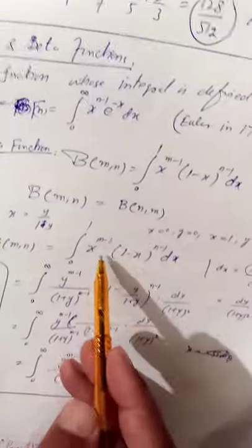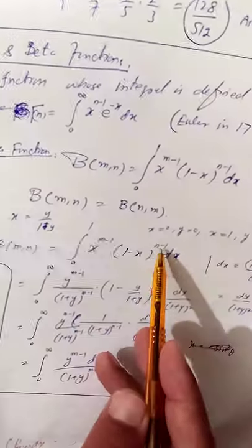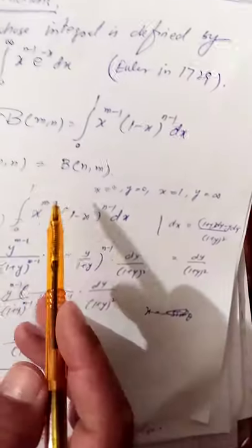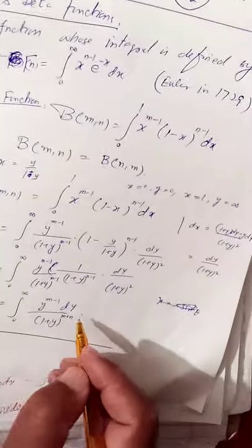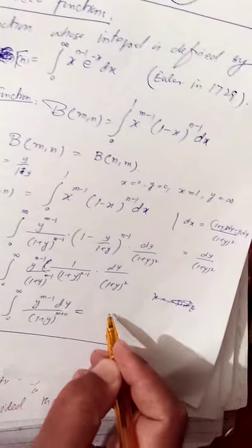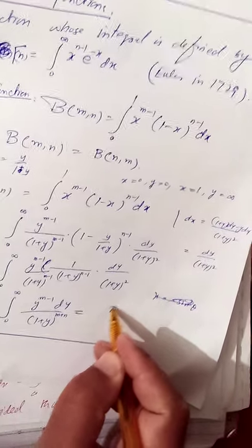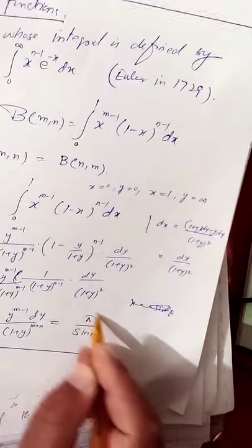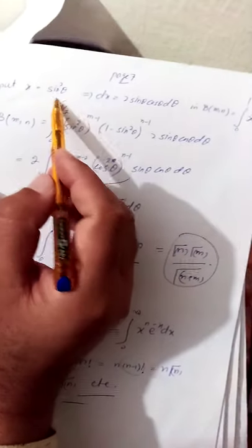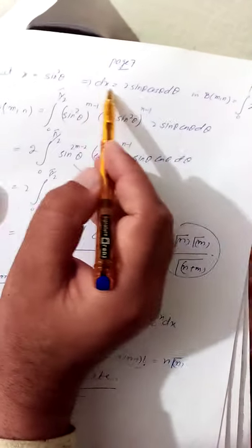Applying the substitution x = y/(1+y) to B(m, n) = ∫₀¹ x^(m−1)(1−x)^(n−1) dx and simplifying, we obtain ∫₀^∞ y^(m−1)/(1+y)^(m+n) dy. This integral can also be evaluated as π/sin(nπ), establishing a key identity.